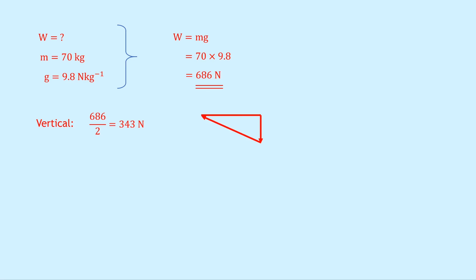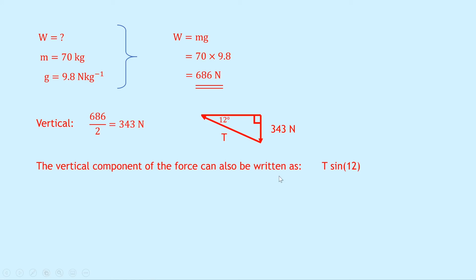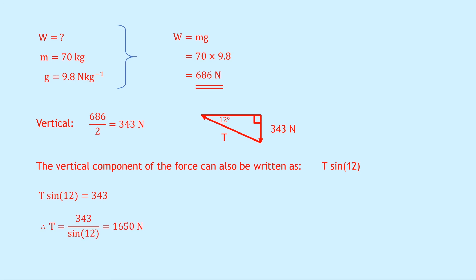Redrawing our triangle: we have 12 degrees, a right angle, 343 newtons downward, and tension T. Using trigonometry — SOH CAH TOA — the vertical component can also be written as T sine 12. We see this because sine 12 equals opposite over hypotenuse, so sine 12 equals the vertical vector divided by T, giving the vertical vector equals T sine 12. Equating the two expressions: T sine 12 equals 343. Dividing both sides by sine 12: T equals 343 divided by sine 12, which gives a final answer of 1650 newtons.